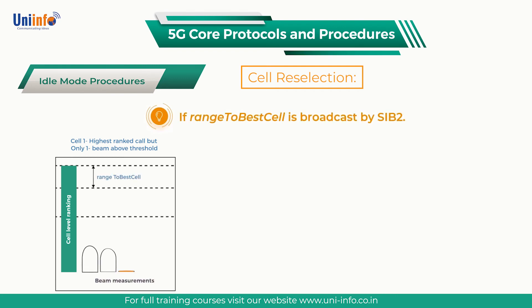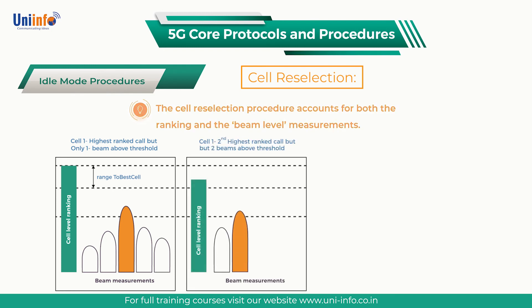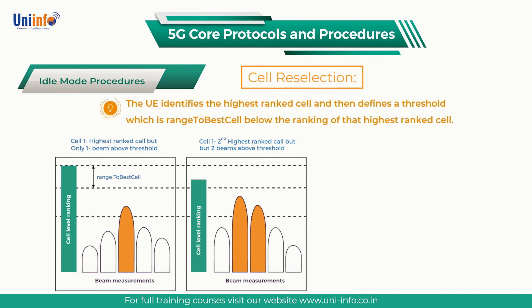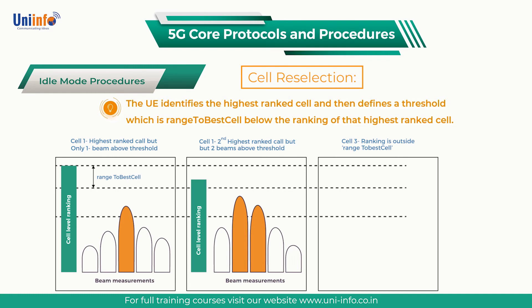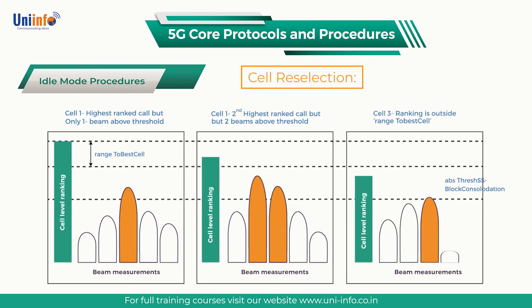If range to best cell is broadcast by SIB2, then the cell reselection procedure accounts for both the ranking and the beam-level measurements. The UE identifies the highest ranked cell and defines a threshold which is range to best cell below the ranking of that highest ranked cell. Any cells which have a ranking below the threshold are excluded. For the remaining cells, the UE counts the number of beams which exceed ABS threshold SS blocks consolidation. The cell with the highest count is categorised as the best cell. Cell reselection is completed if a neighbouring cell has been categorised as the best cell during the time period defined by T-reselection and if more than one second has passed since the UE camped on the current serving cell.